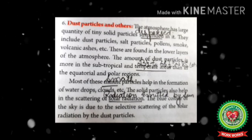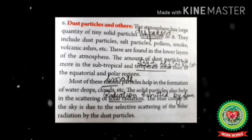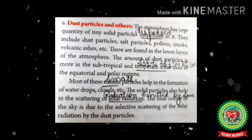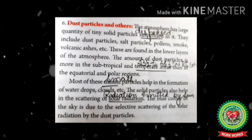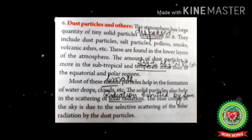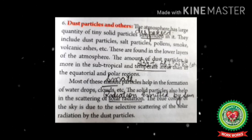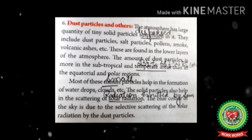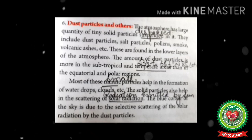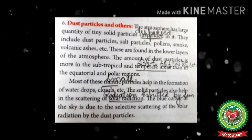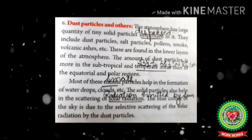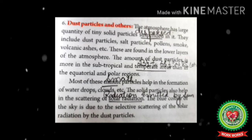The atmosphere has a large quantity of tiny solid particles suspended in it. They include dust particles, salt particles, pollen, smoke, and volcanic ashes — dust particles coming out from volcanoes. These are found in the lower layers of the atmosphere, mostly in the troposphere. The amount of dust particles is more in subtropical and temperate areas than in equatorial and polar regions, due to the dry winds present in subtropical and temperate regions. Most minute particles help in the formation of water droplets and clouds.